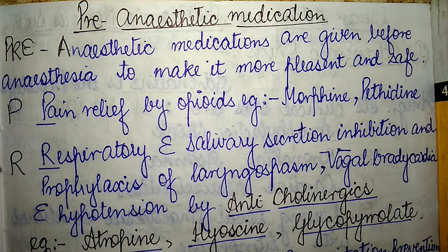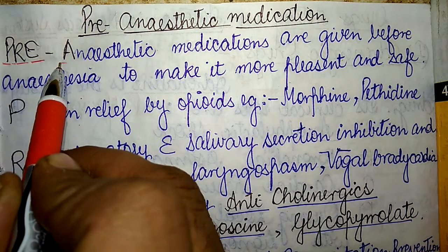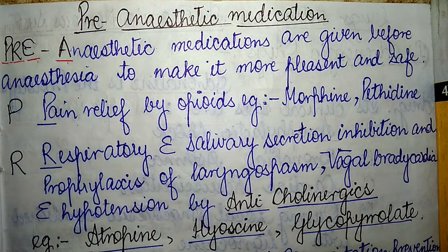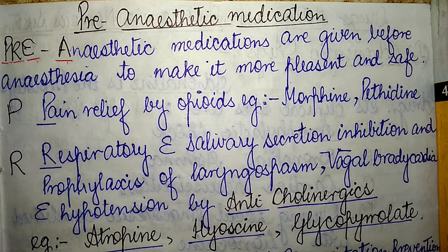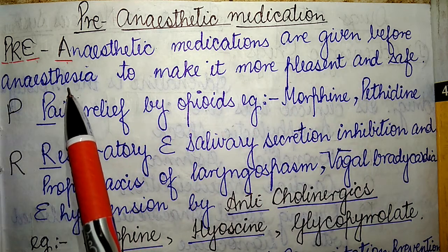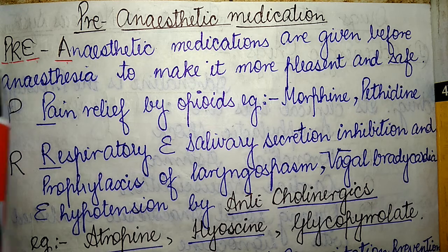The mnemonic I've made uses P-R-E from 'pre' and A from 'anesthetic' — that is PREA — to summarize all the effects of pre-anesthetic medications. Pre-anesthetic medications are given before anesthesia to make it more pleasant and safe.